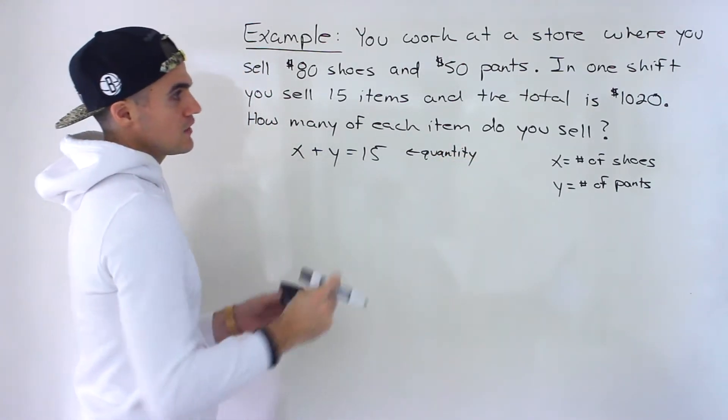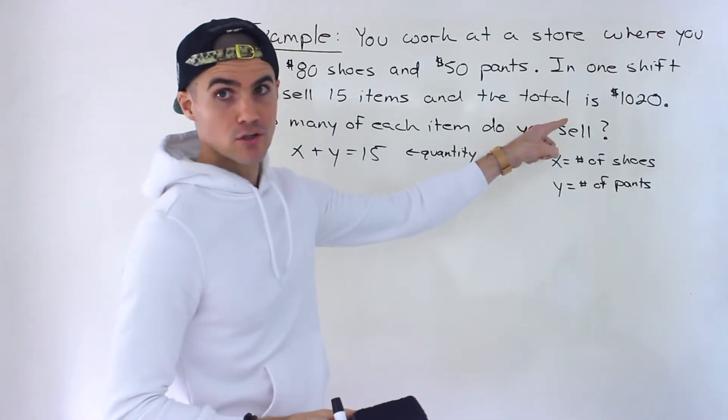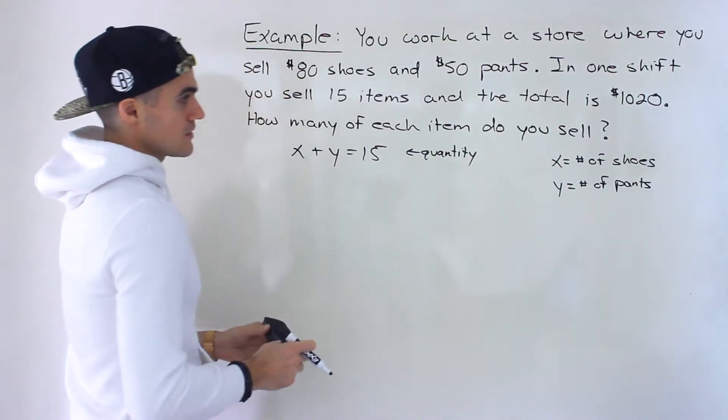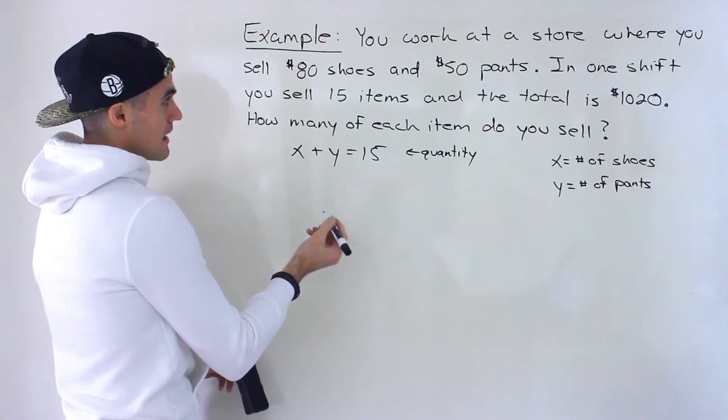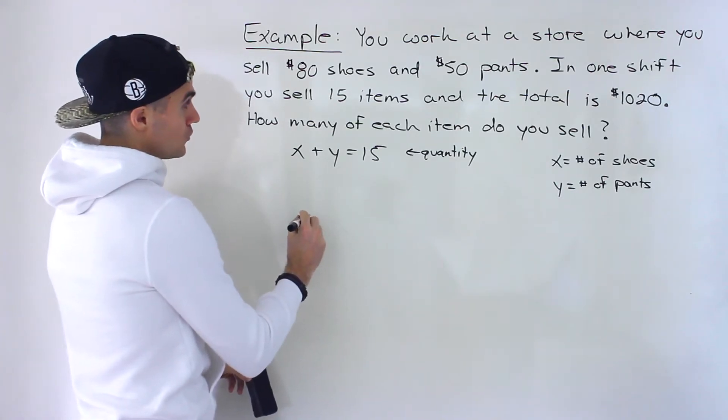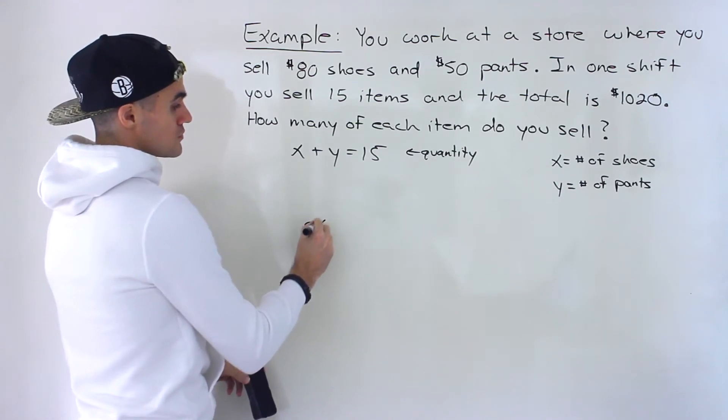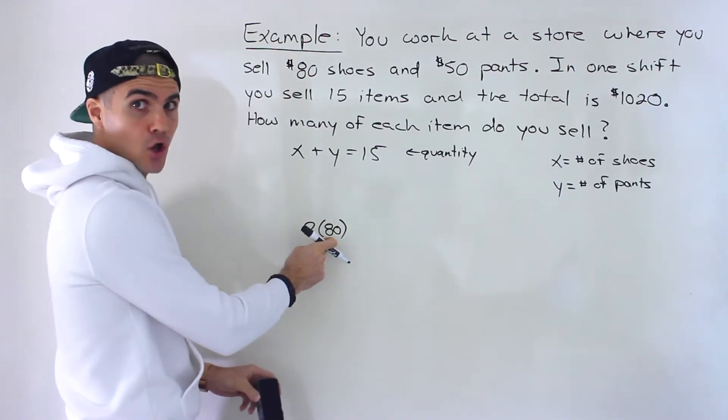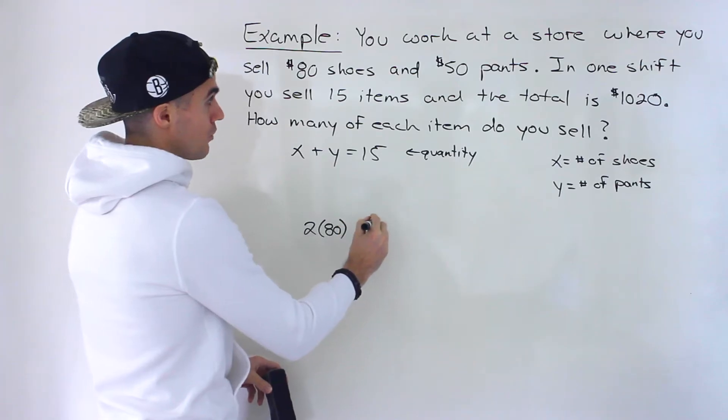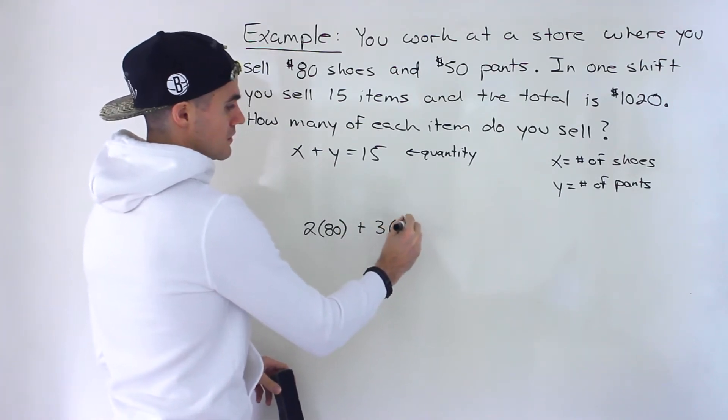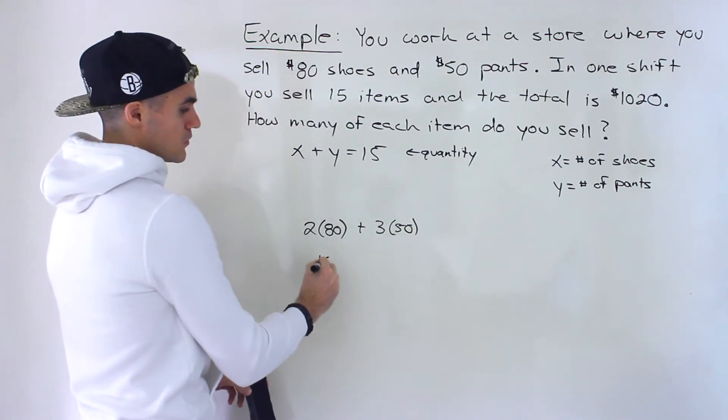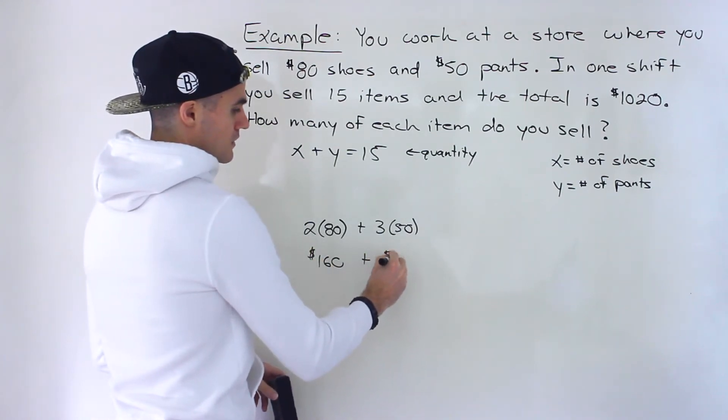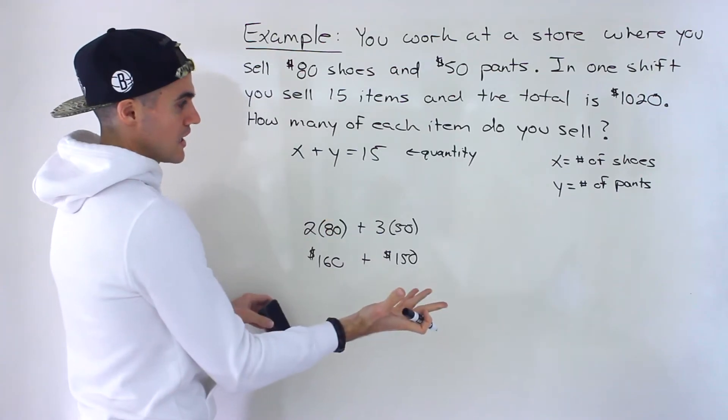But we're also given information about the revenue, which is $1,020. And so just in general, let's say that you sold two shoes. The revenue generated would be two times $80 per shoe. And let's say you sold three pants, three times 50. So this would be $160, and then this would be $150, which would give us a total revenue of $310.